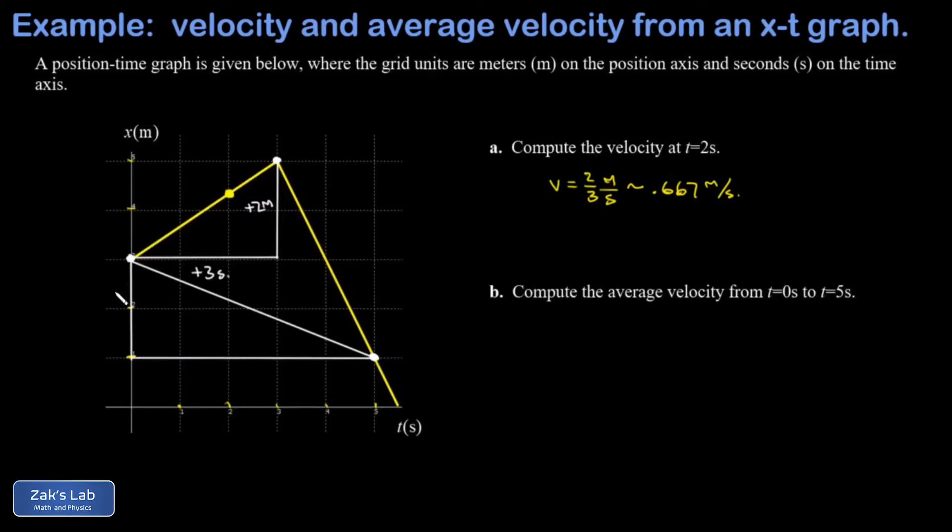And from my starting point to my finishing point here, I have a rise of negative two meters. This is a negative slope. And a run of positive five seconds. Sometimes we call that delta x for that change in position, and a delta t for the change in time.